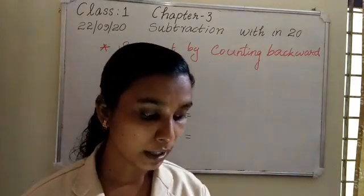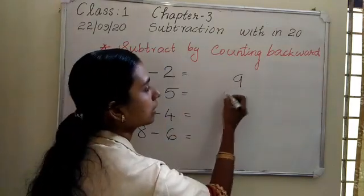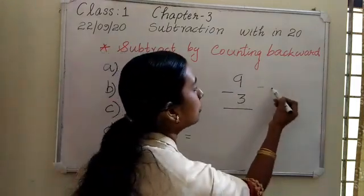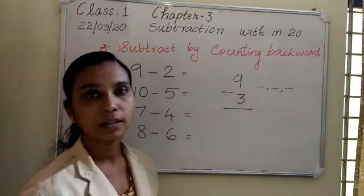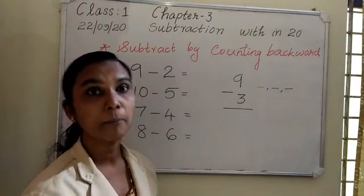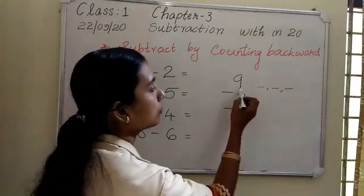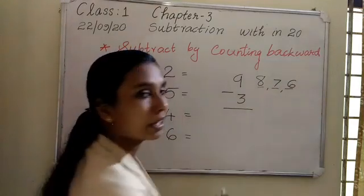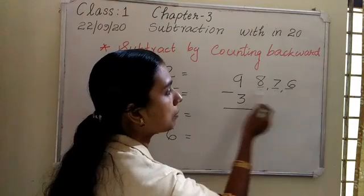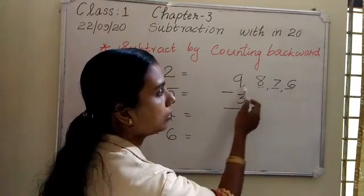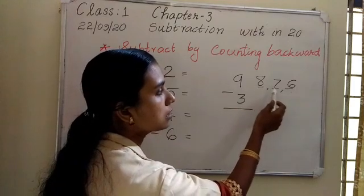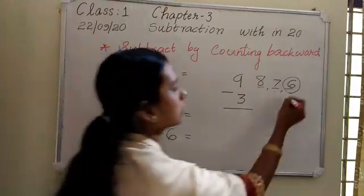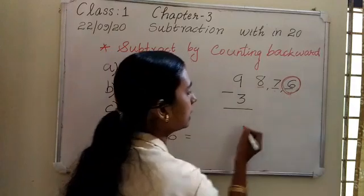In your textbook it is given like this. Look: 9 minus 3 — the bigger number is 9 and smaller number is 3. They have already put 3 dashes for writing the numbers backward from 9. The number before 9 is 8, before 8 is 7, before 7 is 6. We have subtracted 3 from 9, so the difference is 6.